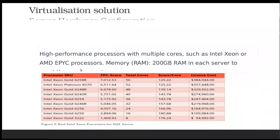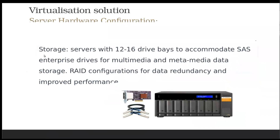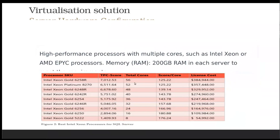For high performance, I researched processor options and found the Intel Xeon. The requirement should be many cores, and the Xeon can provide up to 56 cores, which makes processing speed faster. So, a high performance processor with multiple cores, such as Intel Xeon or AMD processor, is recommended.